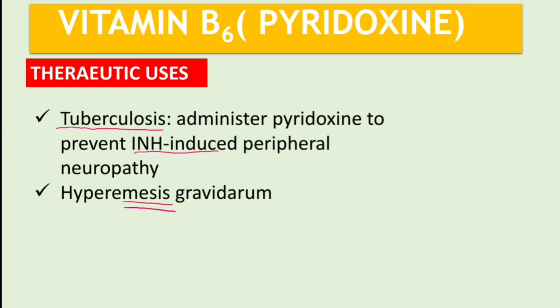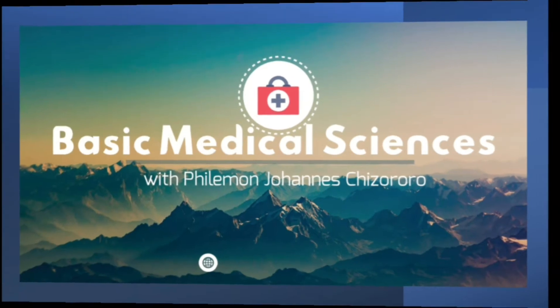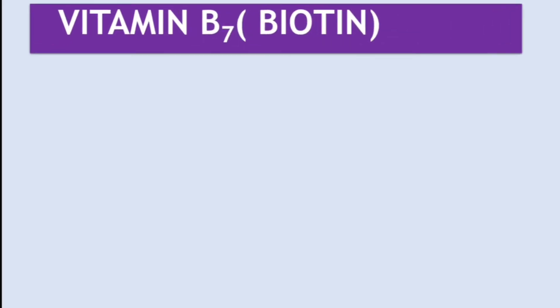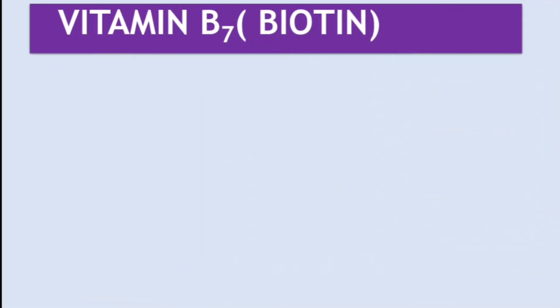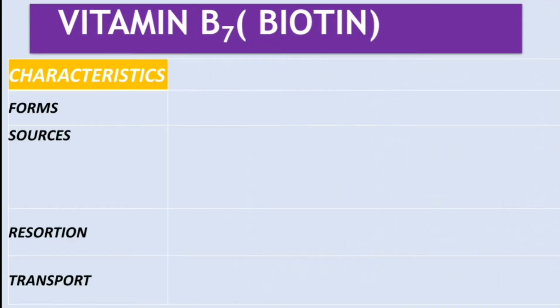Previously we talked about vitamin B6 or pyridoxine. In this video we are going to talk about another very important vitamin called vitamin B7 or biotin. We will discuss the general characteristics, functions, and deficiency of this vitamin. As usual, let's start with the characteristics.